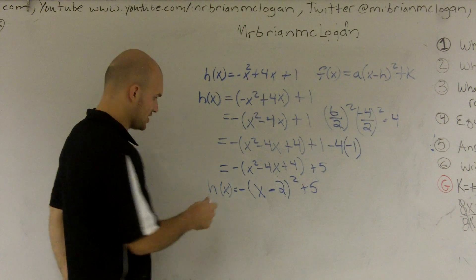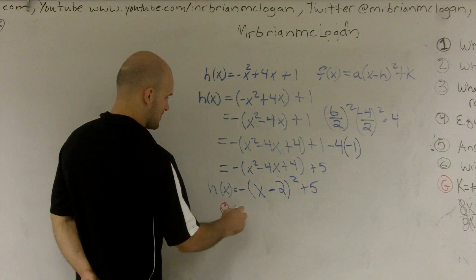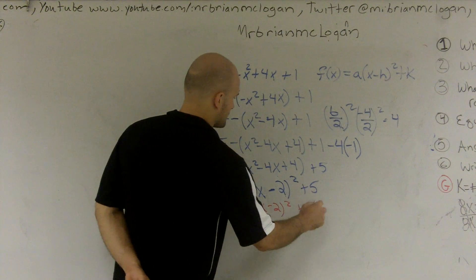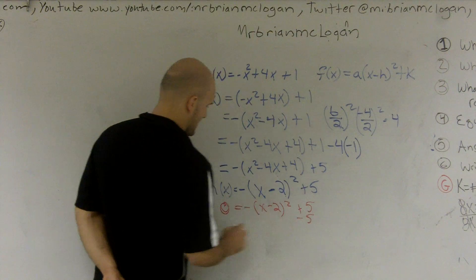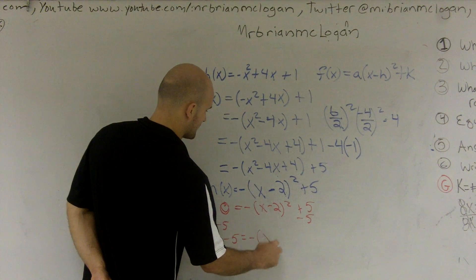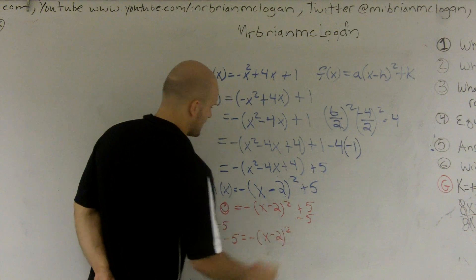Next thing I said is solve and find your zeros. So to solve for this, I first subtract the 5. And I get negative 5 equals negative x minus 2 squared.